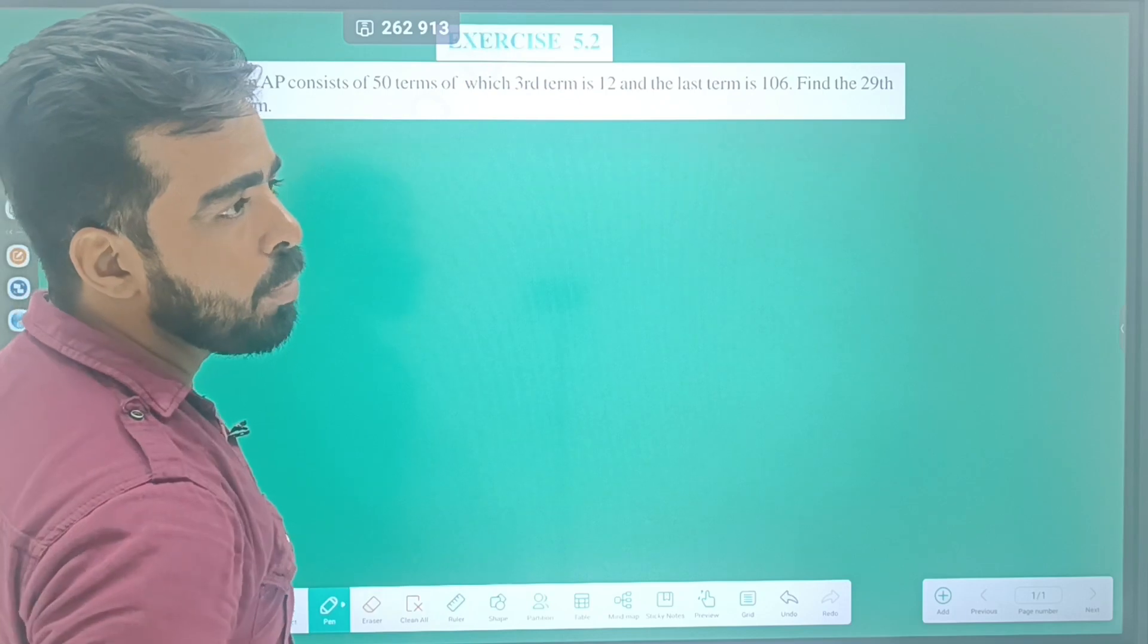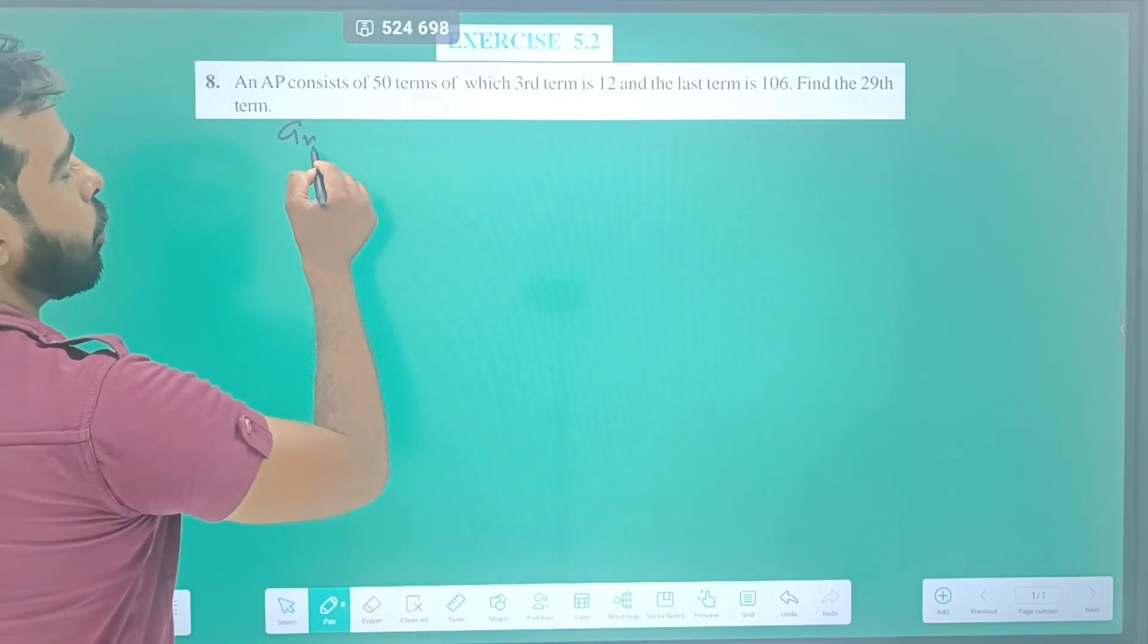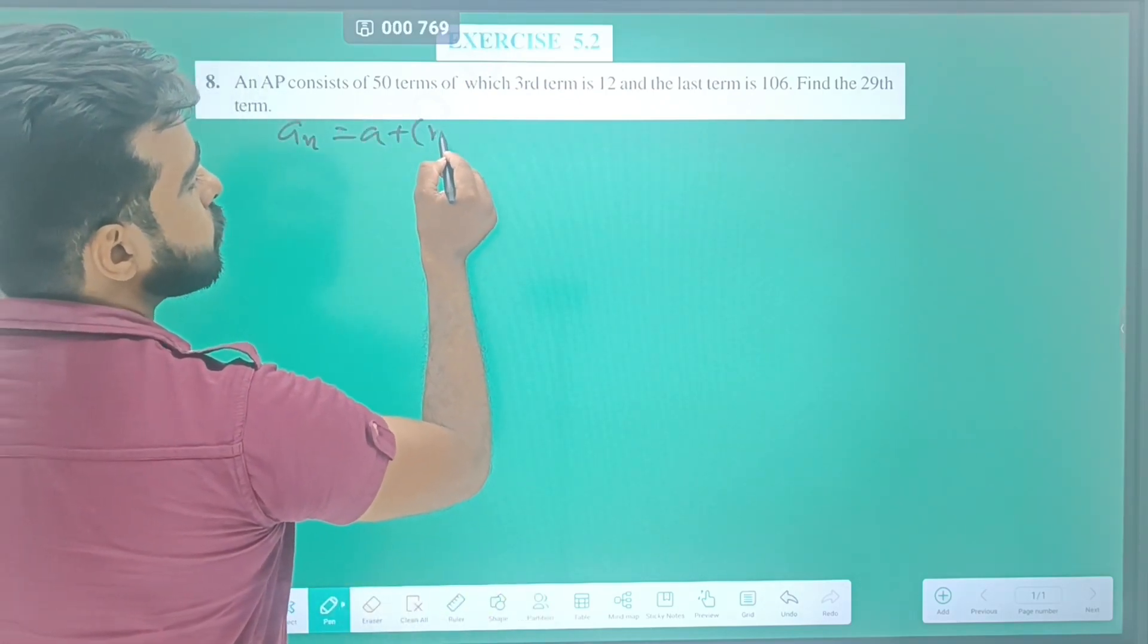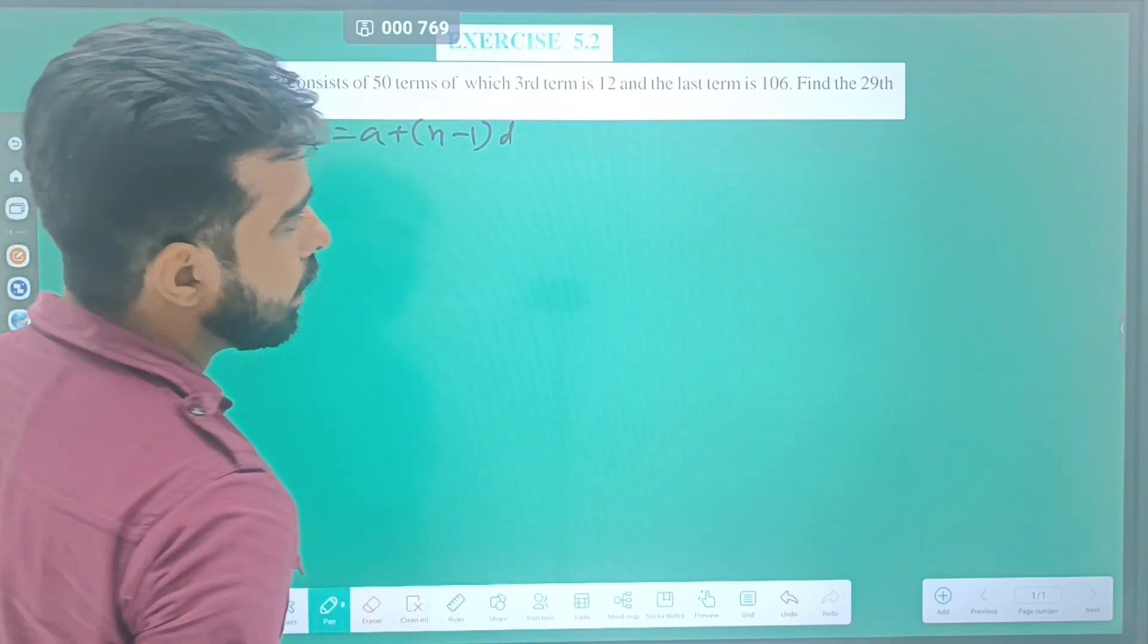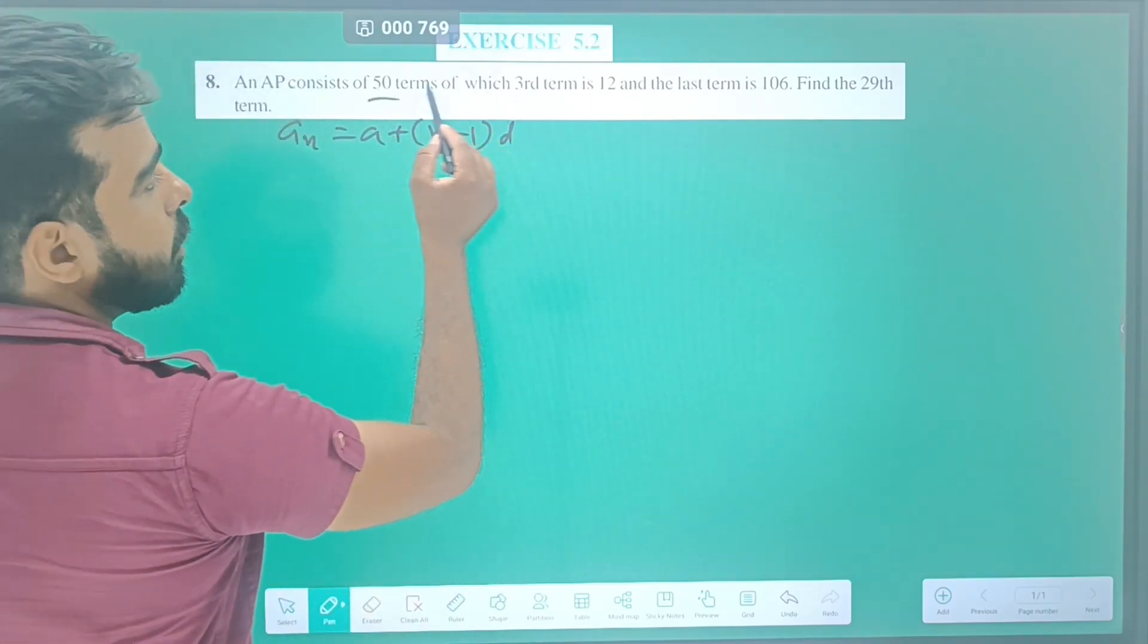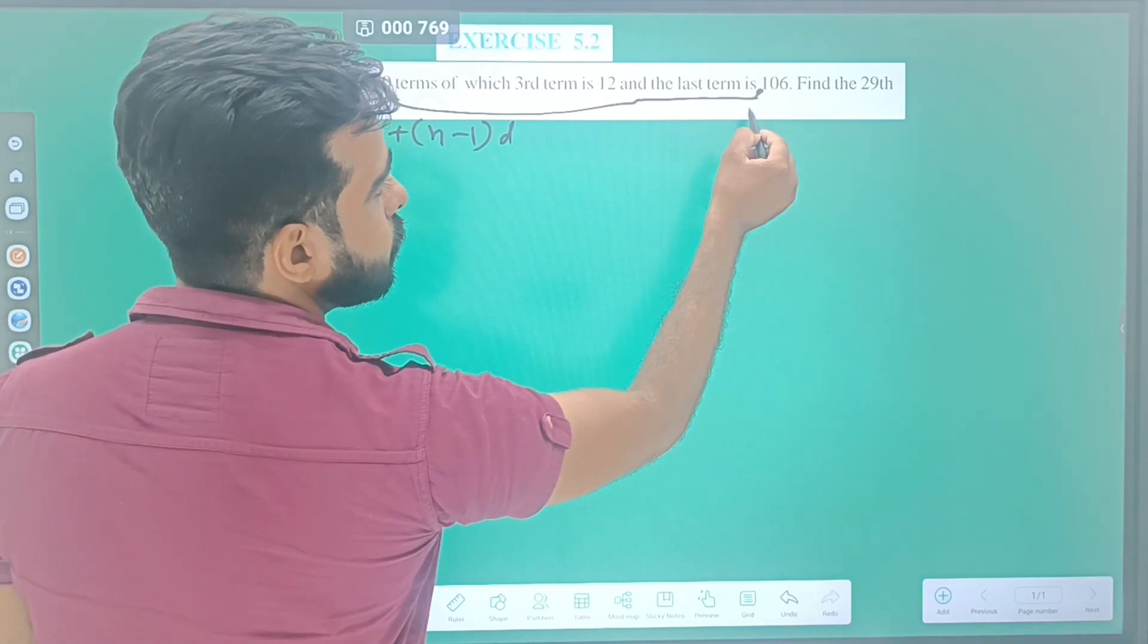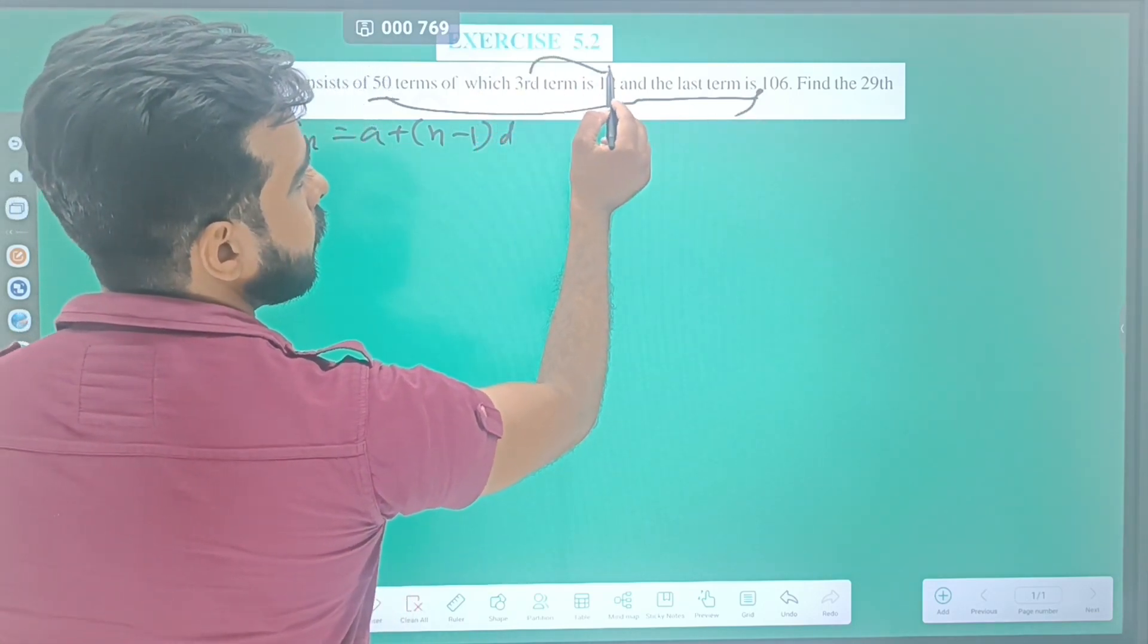The general formula is a_n = a + (n-1)d. Now, the 50th term is 106 and the 3rd term is 12.